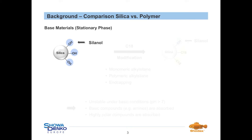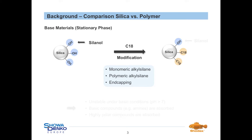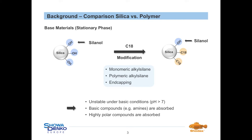Shodex's focus lies on manufacturing HPLC columns which consist of pure polymer-based stationary phases instead of silica-based ones. The most important reason is that polymer-based particles are chemically more resistant and offer a broader application range. For reversed-phase columns, there are methods to modify silica particles with alkyl chains, for example C18, using monomeric or polymeric alkyl silanes. Nevertheless, not all free silanol groups can be occupied by these methods, even after end-capping procedures, leading to high silanol contents and several drawbacks. Traditional silica-based reversed-phase columns are unstable under basic conditions, i.e. pH above 7, and adsorb basic as well as highly polar compounds.